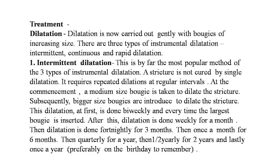Treatment of urethral stricture — dilatation: the patient is taken to the theater under strict aseptic technique, and dilation is carried out gently with boogies of increasing size. Three types of instrumental dilatation: first is intermittent dilatation — the most popular method. A stricture is not cured by a single dilatation; it requires repeated dilatation at regular intervals. Dilatation is first done bi-weekly, then weekly for a month, then fortnightly for three months, then once a month for six months, then quarterly for a year, then half-yearly for two years, and lastly once a year — preferably on the patient's birthday to help them remember.